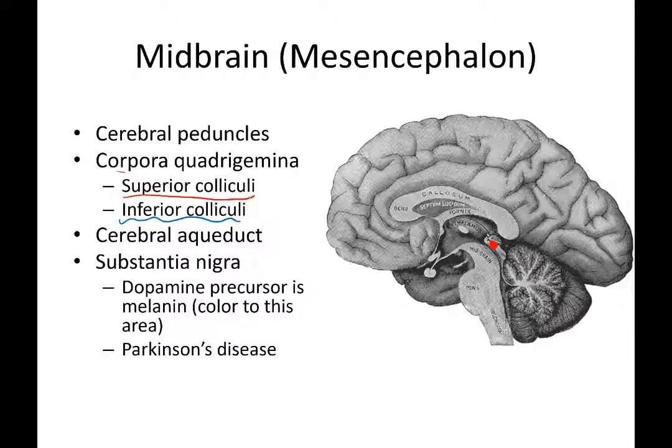The inferior colliculi have more of a role with hearing. If you hear the crack of a bat hitting a ball, based on how your head is positioned, the sound waves enter one ear and then the other, helping you triangulate the sound so you can turn your eyes toward the source. Anytime you hear a noise — a backfire, a door slamming — you can tell which direction to look because of your inferior colliculi.